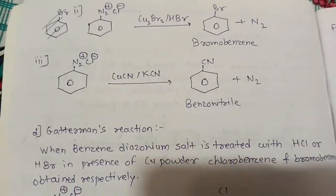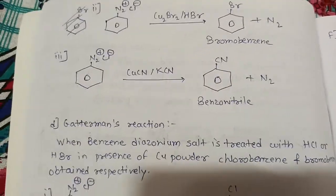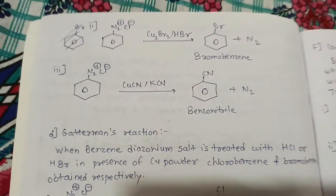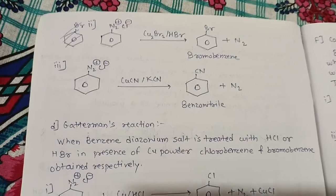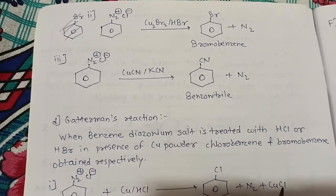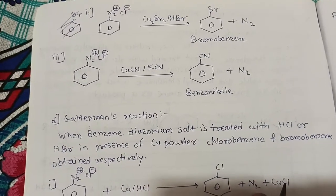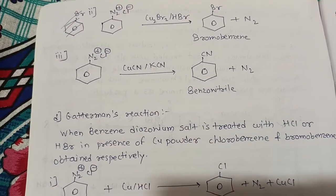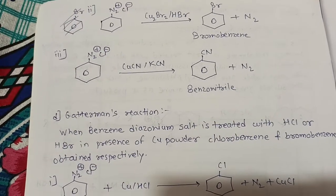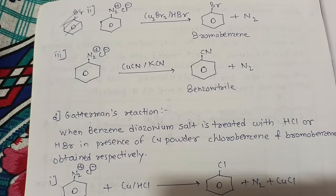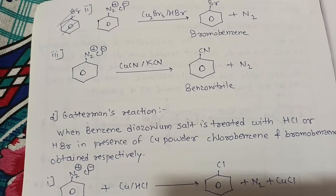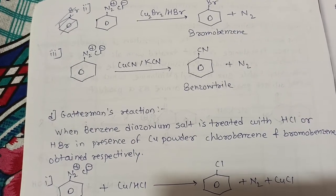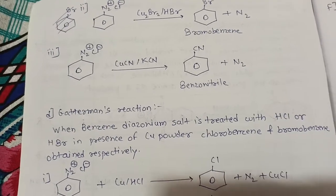Similarly, bromobenzene can be formed — the diazonium salt (good leaving group) is replaced by Br. And we can also substitute cyanide to obtain benzonitrile.